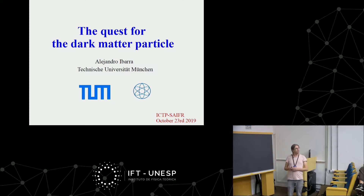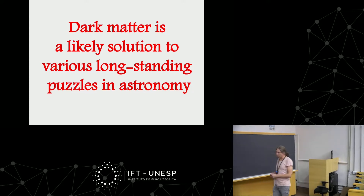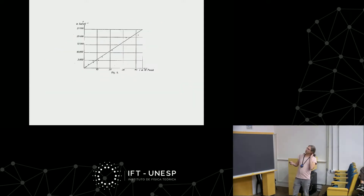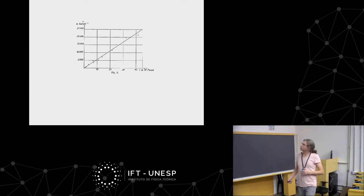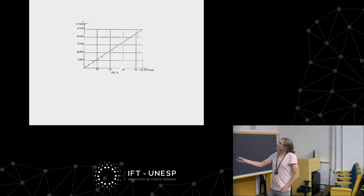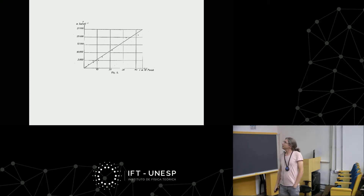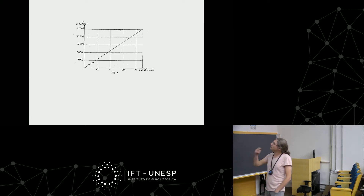This talk is about dark matter. Maybe it's a good start to say what dark matter is. Dark matter is a likely solution to various puzzles in astronomy that have been with us for a long, long time. This plot is one of the earliest manifestations or observations indicating the existence of dark matter in our universe.